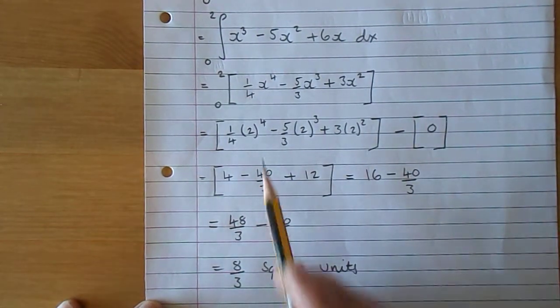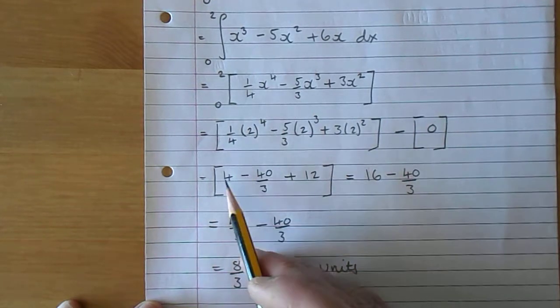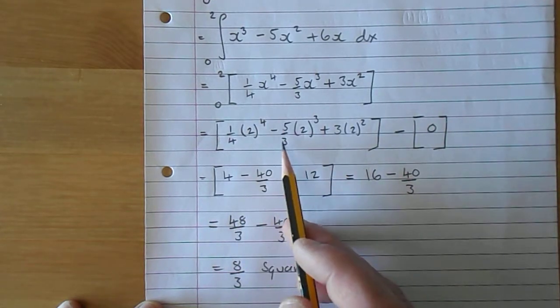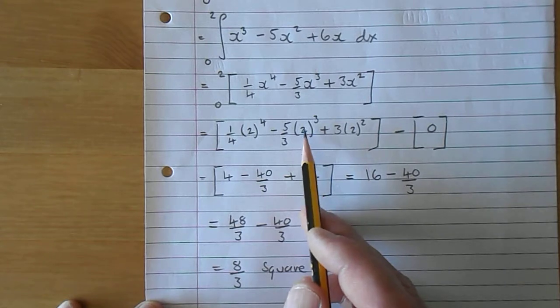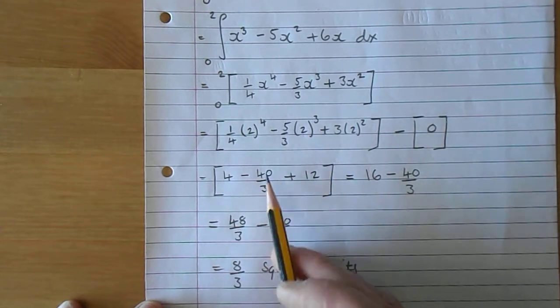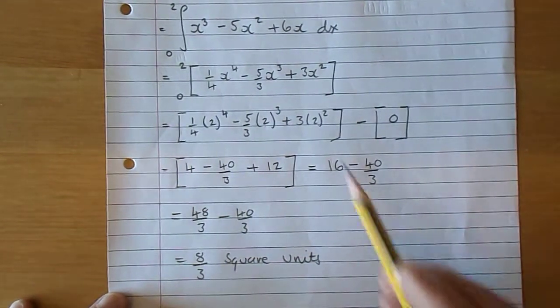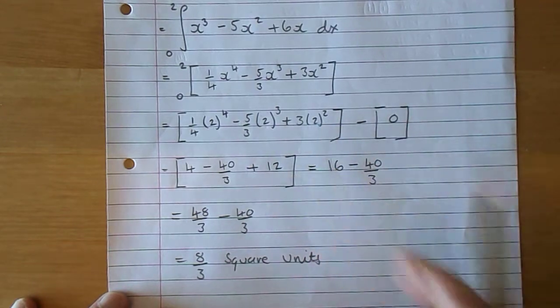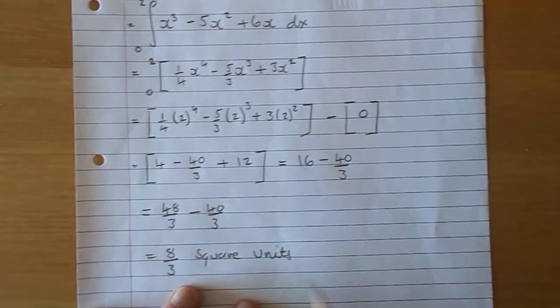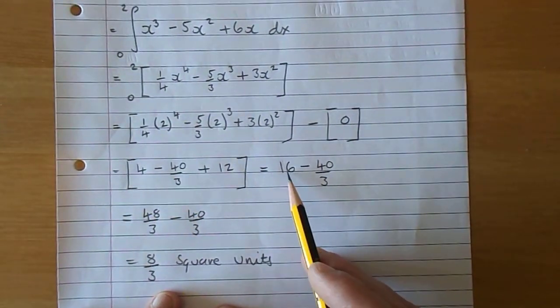2 to the power of 4 is 16, divided by 4 is 4. Take 5 over 3, 2 cubed is 8, 5 8s are 40 over 3. 2 squared is 4, 3 4s are 12. So let's tidy up: 4 and 12 is 16, take 40 over 3.